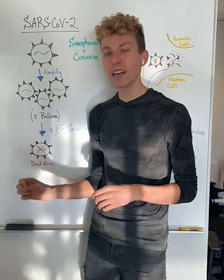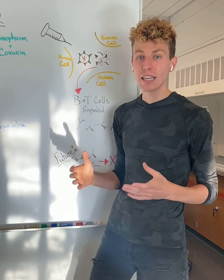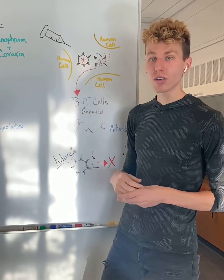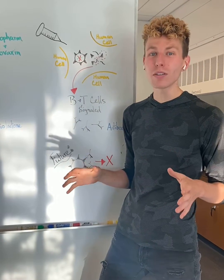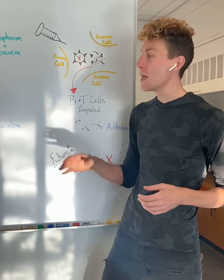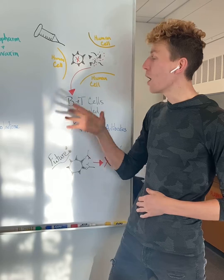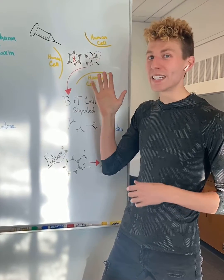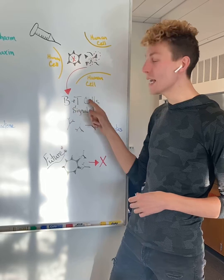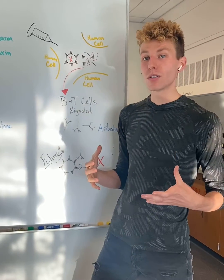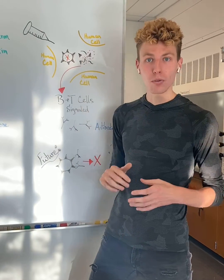We can take advantage of this dead or inactivated virus to formulate a vaccine. Once the shot is administered, the virus — because it's inactivated or dead — is not able to infect us or make us sick, but it will be broken down into its different protein counterparts. Our immune system will recognize it has never seen these proteins before, and will recruit B and T cells that are signaled to create antibodies and memory against these new foreign proteins.